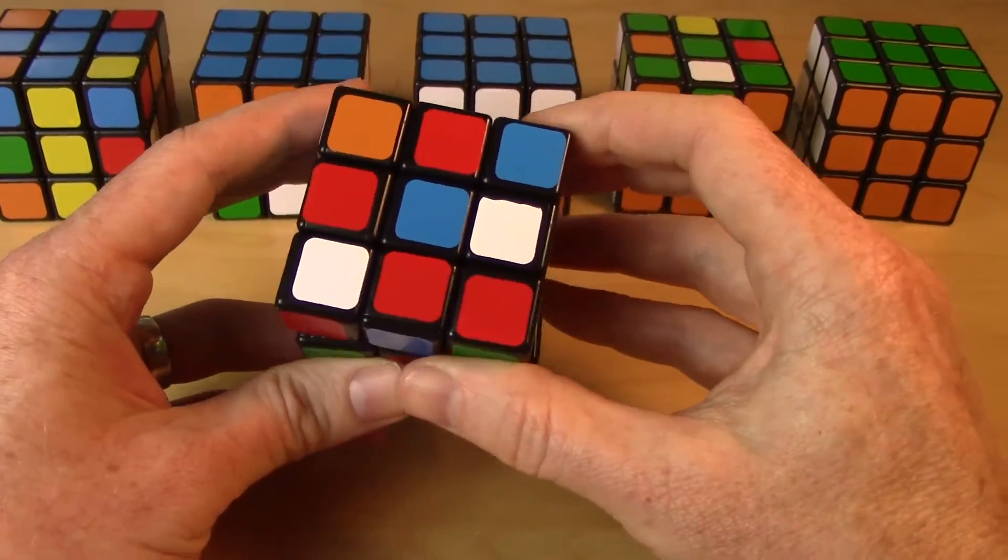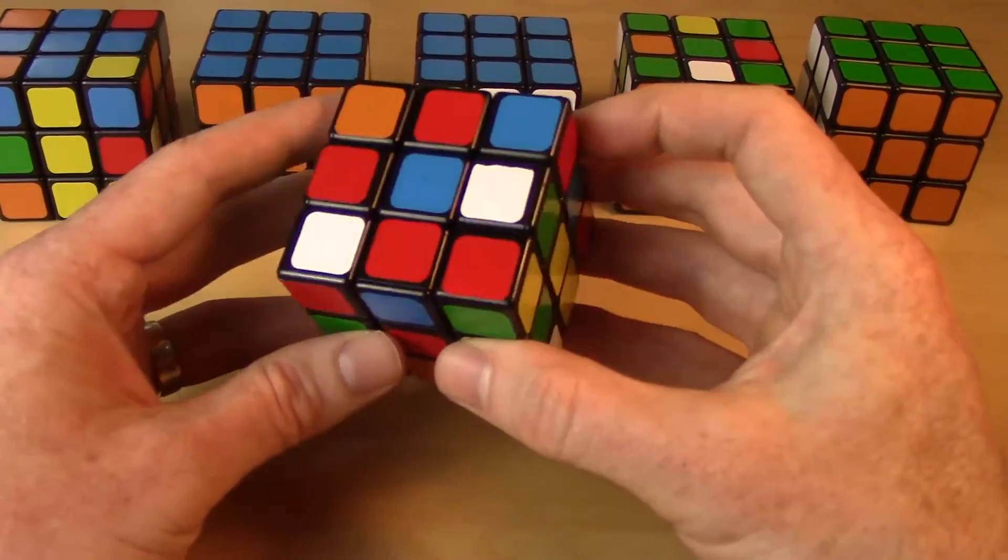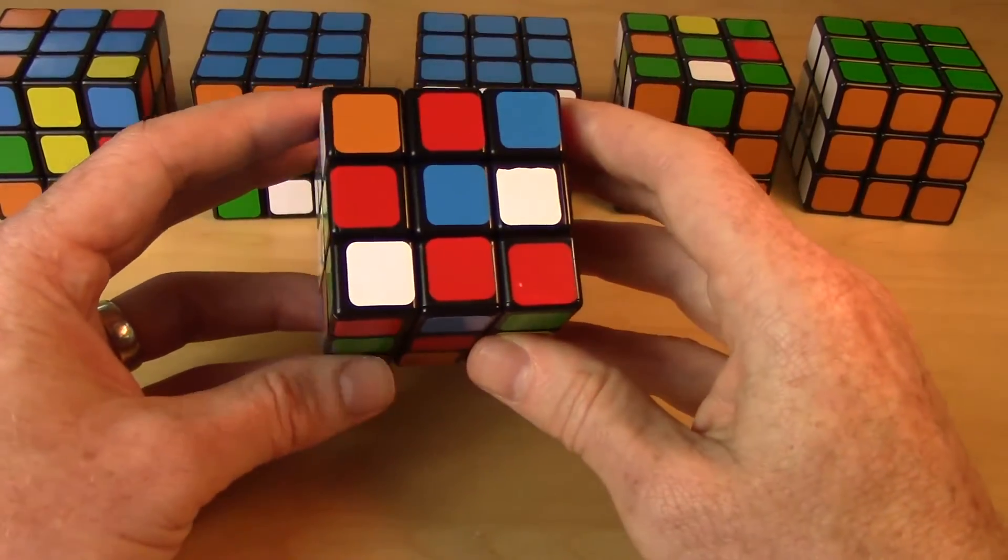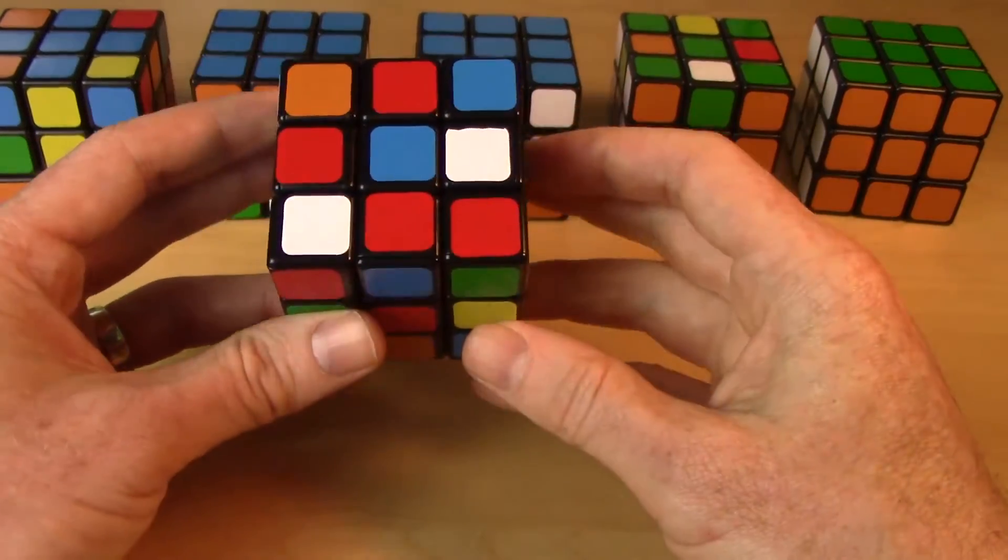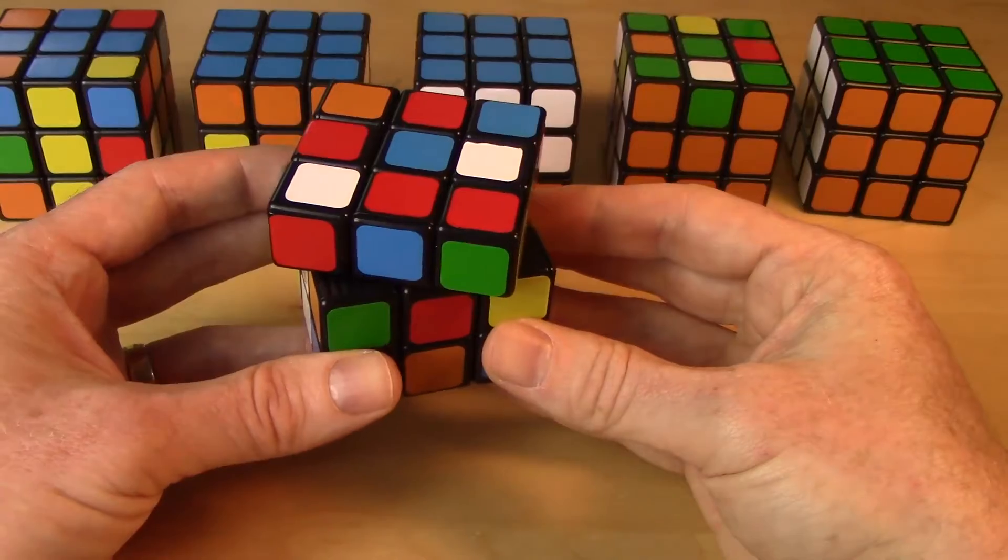You can pick whatever color you want. I think it's common for a lot of people to pick white. People can see the white better than most colors. So whatever color you want to solve first, go ahead, pick that color and hold that center piece up. That's going to be our up layer for the first few steps in solving the cube.